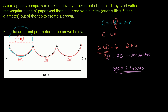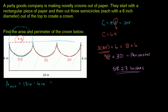Now let's think about the area. To figure out the area, we can find the area of the rectangle before they cut out the semicircles, and then subtract the area of those semicircles. The area of the rectangle is just base times height, which is 18 inches times 6 inches. 10 times 6 is 60, and 8 times 6 is 48, so that gives us 108 square inches for the entire rectangle.